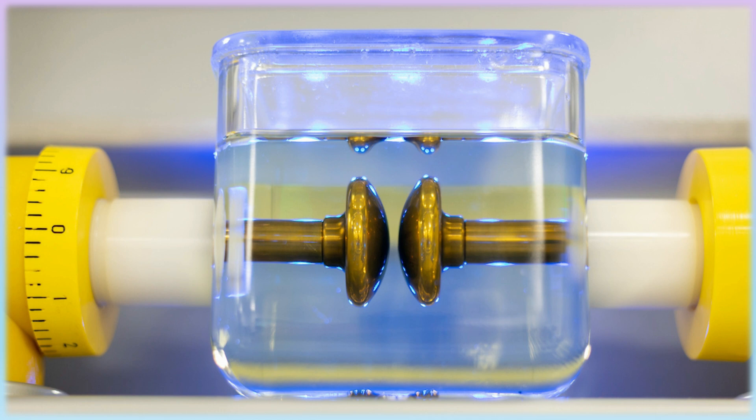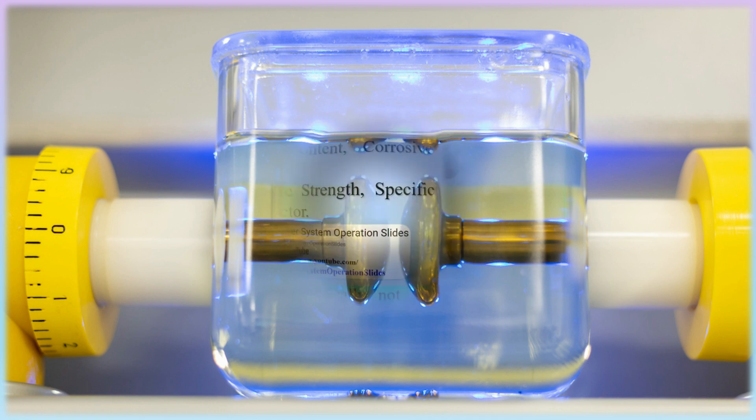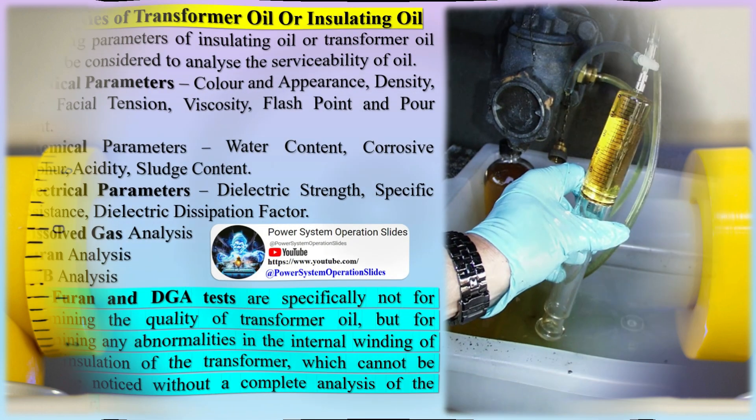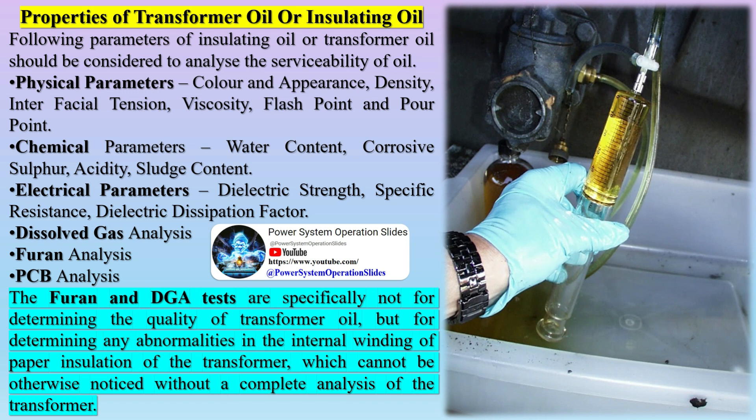Electrical parameters include dielectric strength, specific resistance, dielectric dissipation factor, dissolved gas analysis, furan analysis, and PCB analysis.